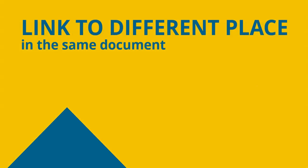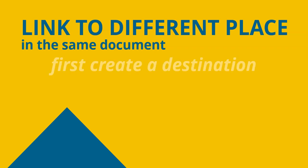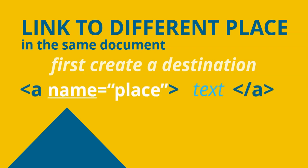To create a link to another place in the same document, there are two parts. First, you create the destination — a bookmark. You use the A tag again, but instead of href, you use the name attribute and give it whatever name you want, like 'top' or 'part two'. Nothing visible changes on the page; it creates an invisible marker at that location.